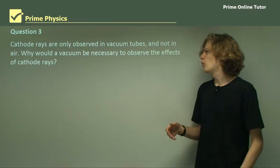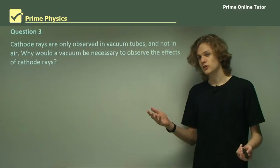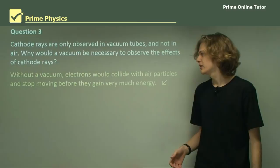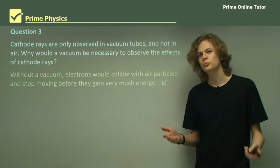Question 3. Cathode rays are only observed in vacuum tubes and not in air. So why would it be that you need a vacuum to observe cathode rays? And as I've touched on before, when they're traveling in air, electrons tend to lose a lot of energy. This means that the electrons can never gain enough energy to create the green glow that's used to observe cathode rays.